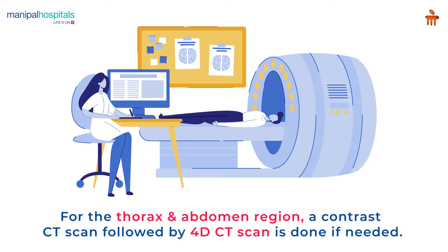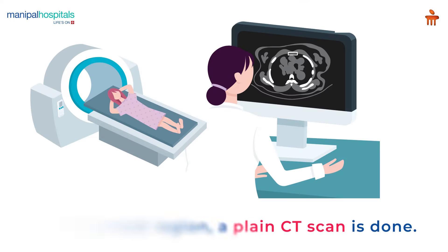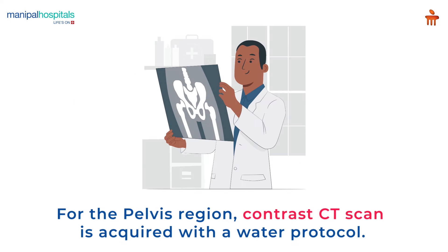For the thorax and abdomen region, a contrast CT scan followed by a 4D CT scan is done if needed. For the breast region, a plain CT scan is done. For the pelvis region, a contrast CT scan is acquired with a water protocol.